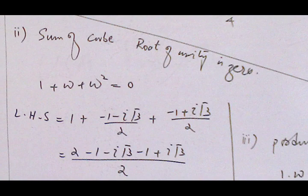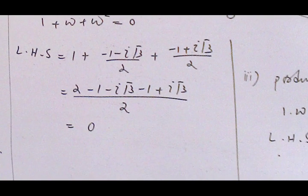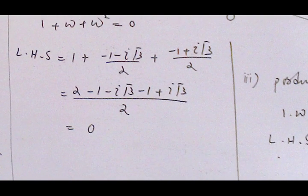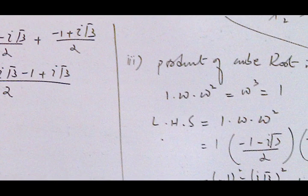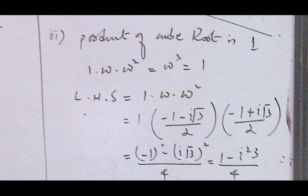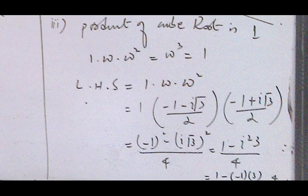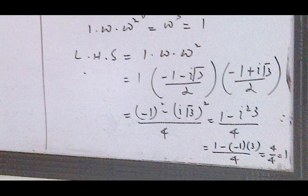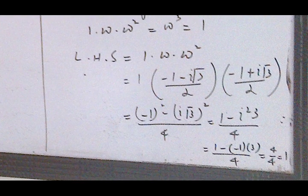The second property: the sum of the cube roots of unity is 0 — if we add all three roots the result is 0. The third property: the product of the cube roots of unity is 1 — if we multiply all three roots the result is 1. Here we apply the a² - b² formula and simplify.